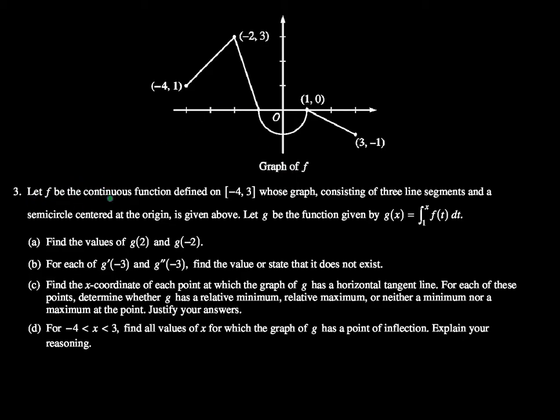It says let f be the continuous function defined on the closed interval negative 4 to 3, whose graph consisting of three line segments and a semicircle centered at the origin is given above. Let g be the function given by g of x equals the integral from 1 to x of f of t dt.